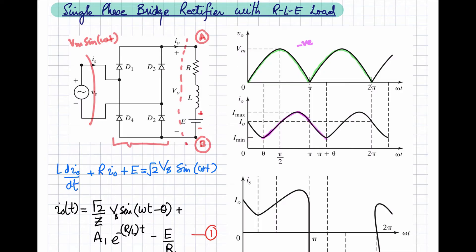From that point onward, the current starts increasing again in the next cycle. This is the current waveform for this particular load. The continuity of the load current depends upon the inductance — if the inductance is very high, you will observe a continuous current, meaning it does not become zero at any instant of time. It is always positive, changing between the minimum value I_min and the maximum value I_max.